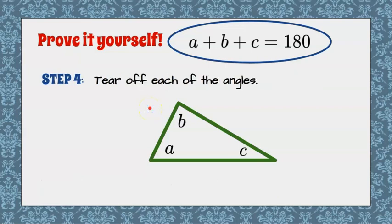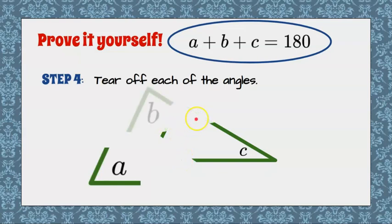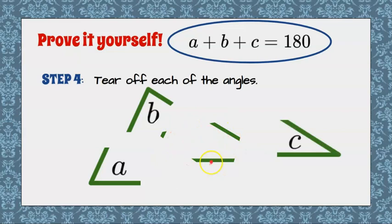Now that you've cut out your triangle step four is to tear off each of the angles. So here I'm going to do it virtually. I'm going to tear off angle A, I'm going to tear off angle B, and I'm going to tear off angle C. You can discard the middle of your paper. You're just going to use the three angles that you tore off.